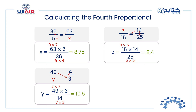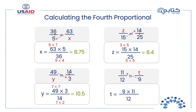Finally, calculate t: 11 over 12 equals t over 9. We cannot simplify in this case, so calculate directly: 11 times 9 divided by 12 equals 8.25. The missing value t equals 8.25.